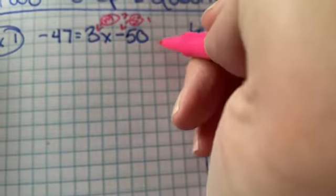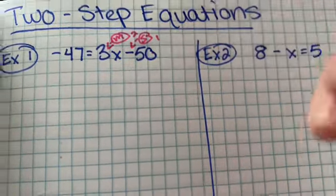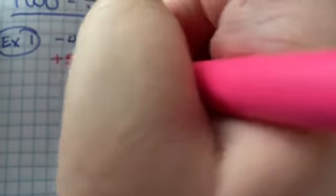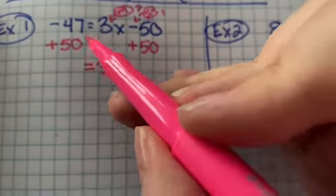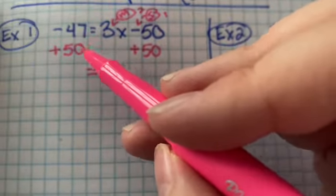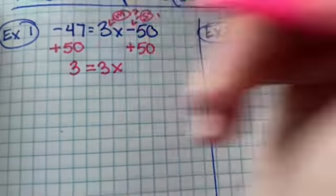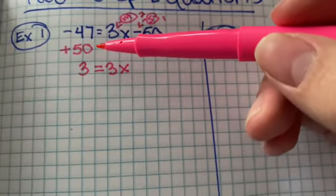The inverse operation to subtraction is addition, so we're going to have to add 50, add 50. We're going to bring down this 3x. Negative 47 plus 50 is the same thing as 50 minus 47, so this is going to be 3. And of course, you can check that with the calculator or you may know it in a different way. That's okay as well.